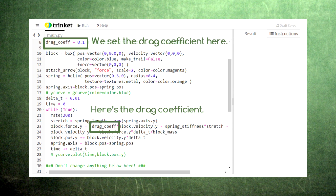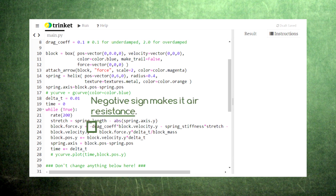We'll play around with different values of the drag coefficient in a minute. Lastly, we have a negative sign out front to guarantee that the force of air resistance always points opposite of the velocity.